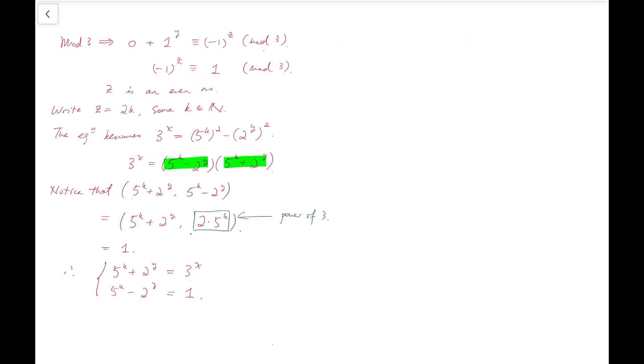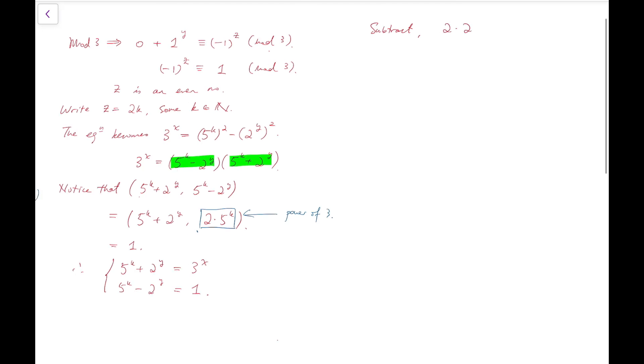At this point, I would rather remove the part of 5, because that is rather too large. So I'm going to subtract the two equations. Then I have 2 times 2 to the y equals 3 to the x minus 1. And rearranging, I have 1 plus 2 to the y plus 1 equals 3 to the x.